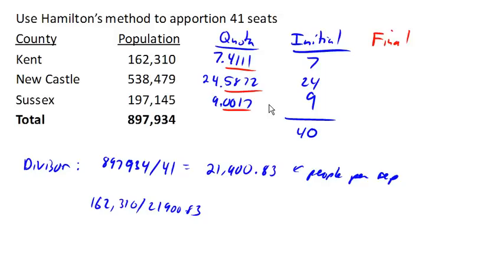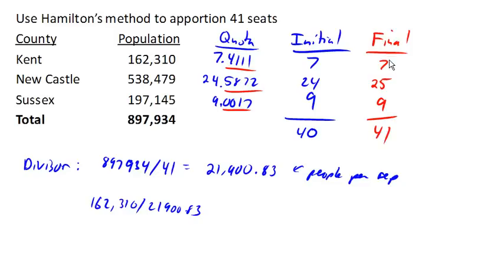So Hamilton's method says that Newcastle should get that last seat. In our final apportionment, Kent ends up with 7 seats, Newcastle with 25, and Sussex with 9.